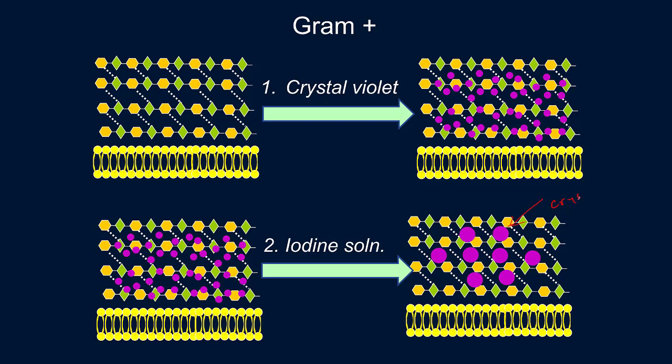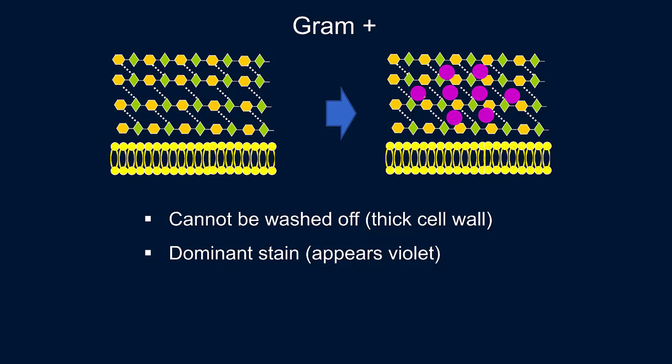This picture shows how the stain is integrated into the cell wall. The gram positive cell wall is so thick that these crystals are pretty much stuck in there, so when we do the alcohol wash it doesn't really take them away. After the wash we apply the counter stain — safranin — but since crystal violet is the dominant stain, the safranin cannot replace it. So even after the wash and counter stain, it still appears the same violet color. This is the situation in gram positive bacteria.